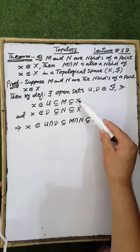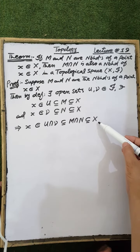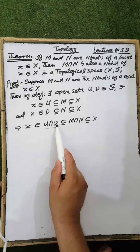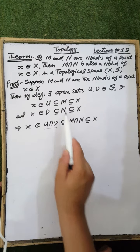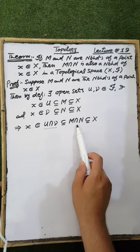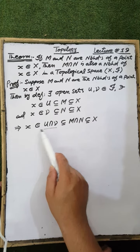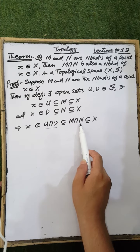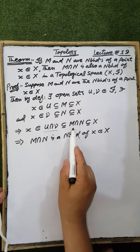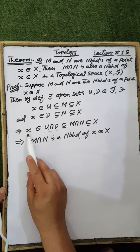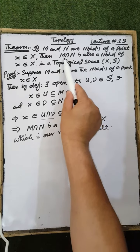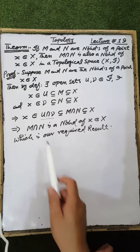The intersection U∩V is an open set, as the intersection of two open sets is open. M and N are subsets of the ground set X, so M∩N is also a subset of the ground set X. This open set U∩V is contained in M∩N, which is a subset of the ground set X. This implies that M∩N is a neighborhood of the point X, which is what we had to prove.